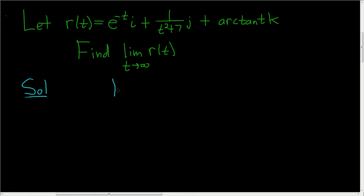The first step will be to replace r of t with the function it actually represents. So this is the limit as t approaches infinity of r of t. So e to the negative t i plus 1 over t squared plus 7 j plus the arctangent of t k.